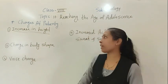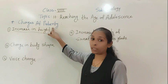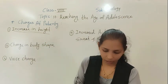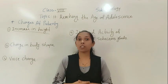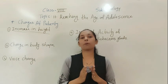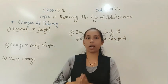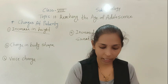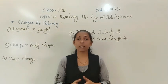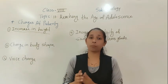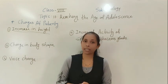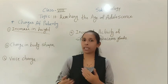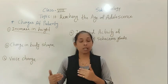In your textbook on page number 114, there is a chart. With the help of that chart we can calculate the height at a particular age. According to the age, the percentage of full height for boys and girls is given in that table, and with it we can calculate the expected height at any age.